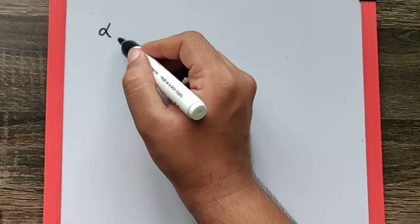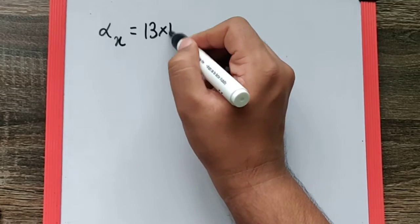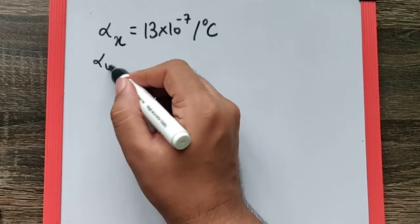But in this case, the α is given different for different dimensions. For example, if we assume α_x to be 13×10⁻⁷ per degree Celsius, then α_y and α_z...